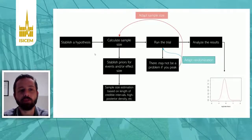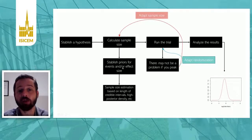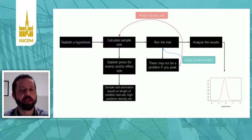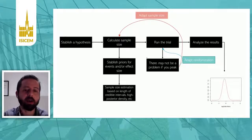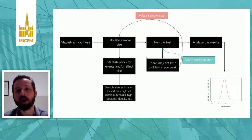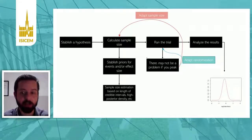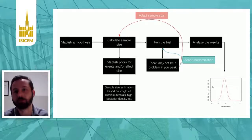Under the Bayesian framework, things are a bit different. You establish a hypothesis, calculate a sample size, and establish priors for the events or the effect size — you have to plug in some prior information. Then you run the trial. There's not much of a problem if you peek at the data; REMAP-CAP, for example, had monthly checks of the data to monitor effect size over time for their COVID-19 report. This allows you not only to adapt sample size and randomization, but also to stop the trial once you have some degree of certainty — or certainty of futility — and then analyze the results by plotting the possible effect sizes compatible with the data given the priors.